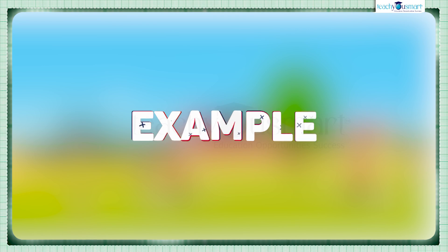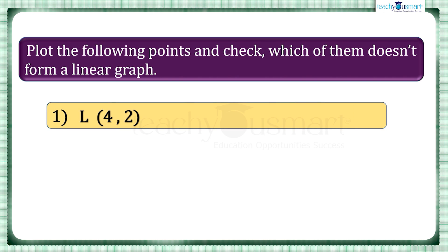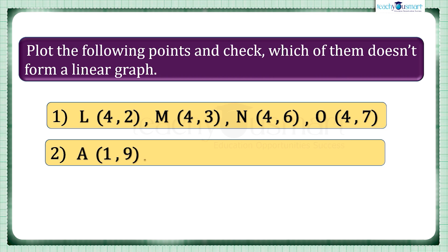Let's see an example. Plot the following points and check which of them doesn't form a linear graph. First one: L (4,2), M (4,3), N (4,6), and O (4,7). Second is A (1,9), B (3,7), C (4,6), and D (6,7). Here two sets of points are given.